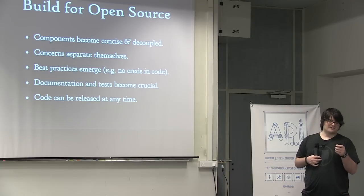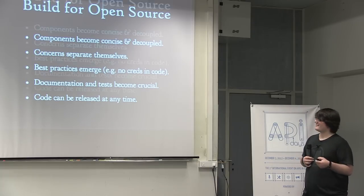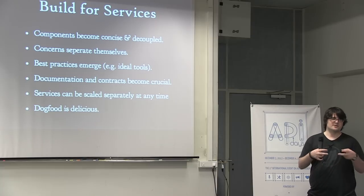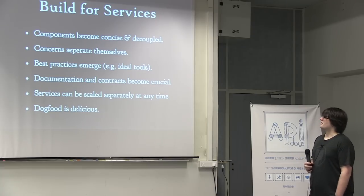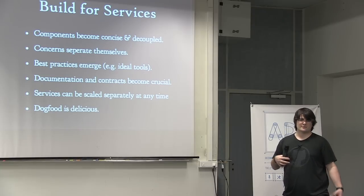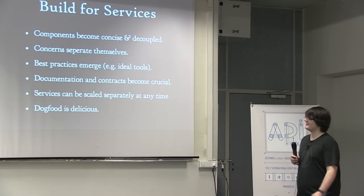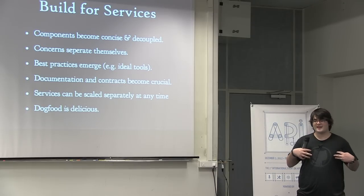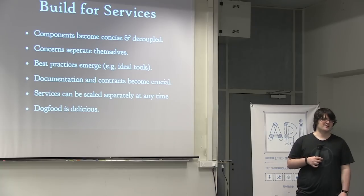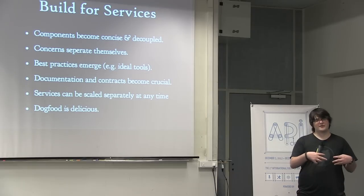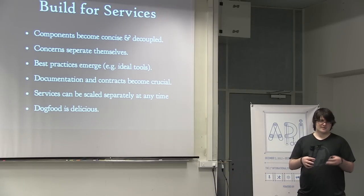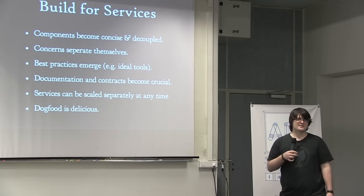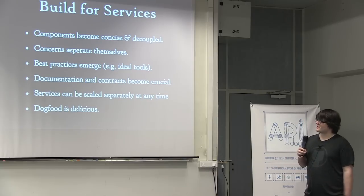Another side benefit is that code can be released at any time if you do go open source. Just as you build for open source, you can build for services. Instead of large monolithic applications, all those same benefits come to light — the different components in your architecture can become separate, not tightly coupled. You won't have that giant diagram with all those lines. Best practices start to emerge and you can use ideal tools for different jobs. For example, Java has NIO for doing a tremendous amount of concurrent IO — millions of connections — so that small part of your stack could be written in Java while everything else is in something else. That's something you couldn't do with one monolithic application. And you can start using your own services to build your own services — sip your own champagne.